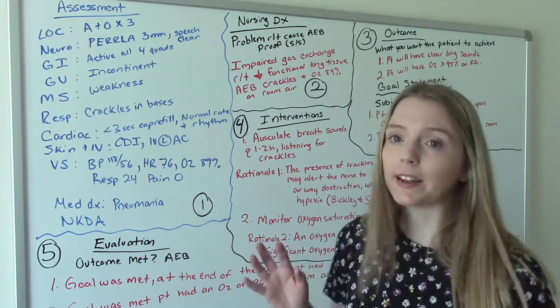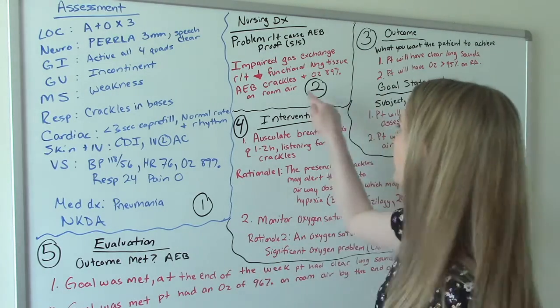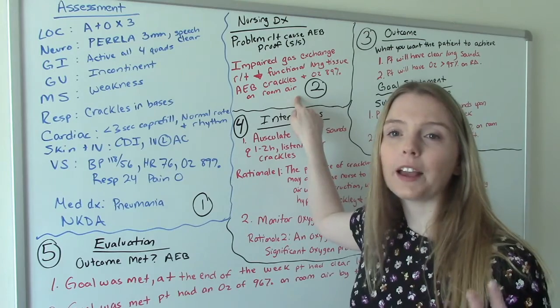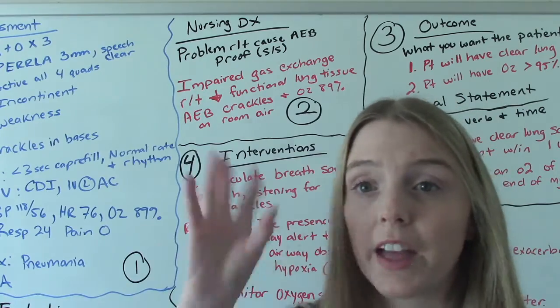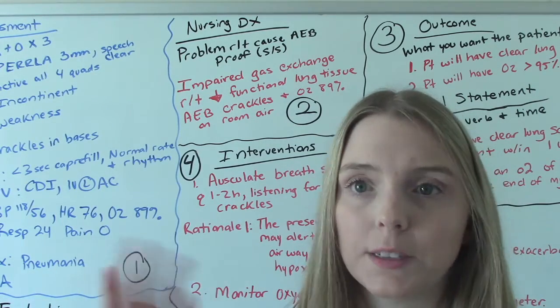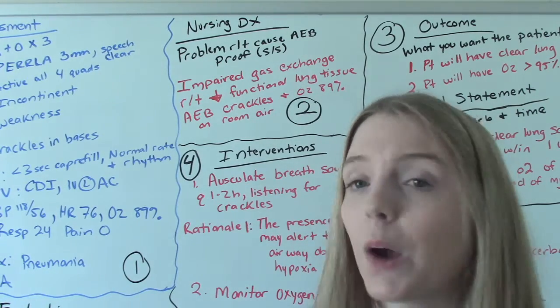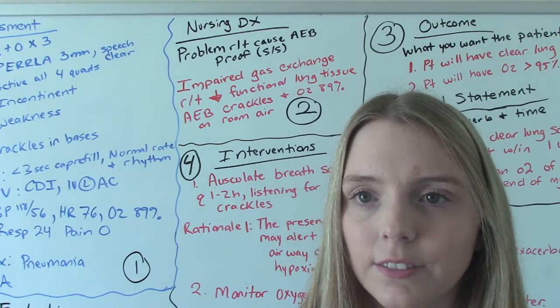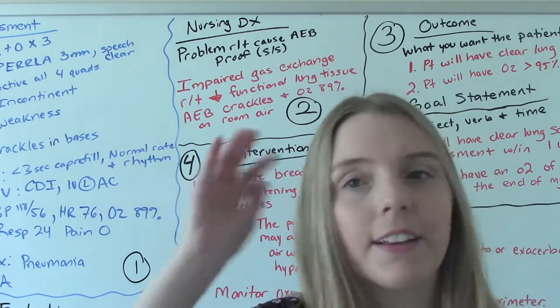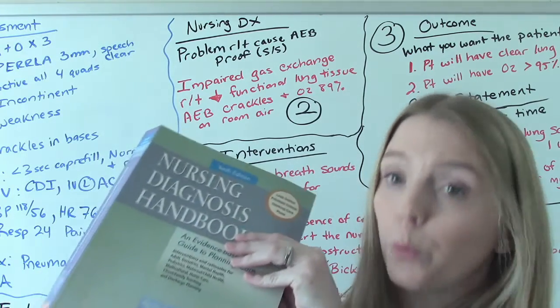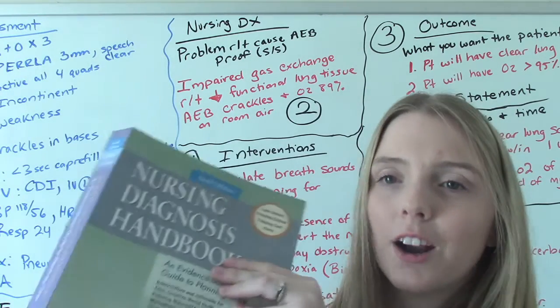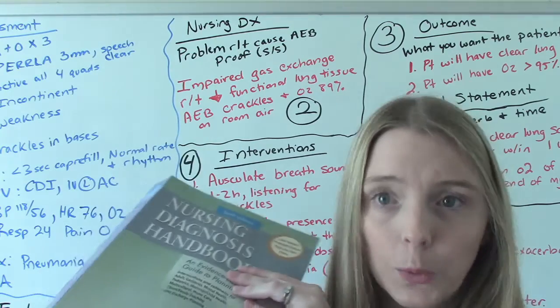So now we need to go into our second step. Step number two is forming a nursing diagnosis. Now we're ready to move on to step two. So step one, we've gathered all of our information. We've kind of figured out what's important and what's not. And now we're ready to make our nursing diagnoses. Now, where does this come from? We don't make it up. It comes from our book. These have been approved. So these are our approved nursing diagnoses. These are the only ones we're allowed to use.